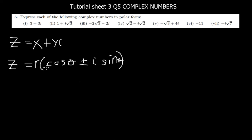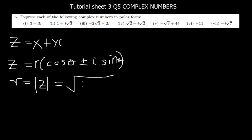Now, what is r? This r is the magnitude of z. According to coordinate geometry, the magnitude is found as the square root of x² + y². That gives us r. And then one might ask how to find θ — that also takes us back to coordinate geometry.